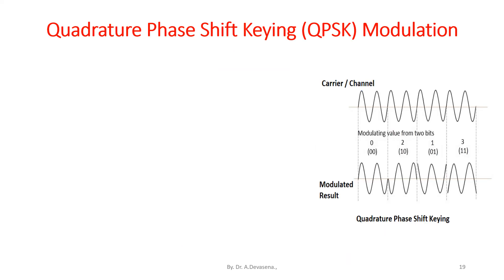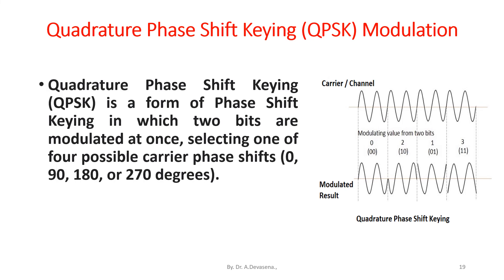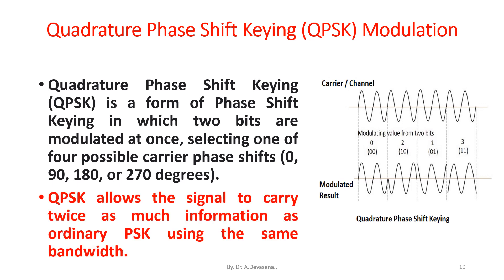Quadrature phase shift keying (QPSK) is a form of phase shift keying in which two bits are modulated at once, selecting one of four possible carrier phase shifts: 0, 90, 180, or 270 degrees. QPSK allows the signal to carry twice as much information as ordinary PSK using the same bandwidth.